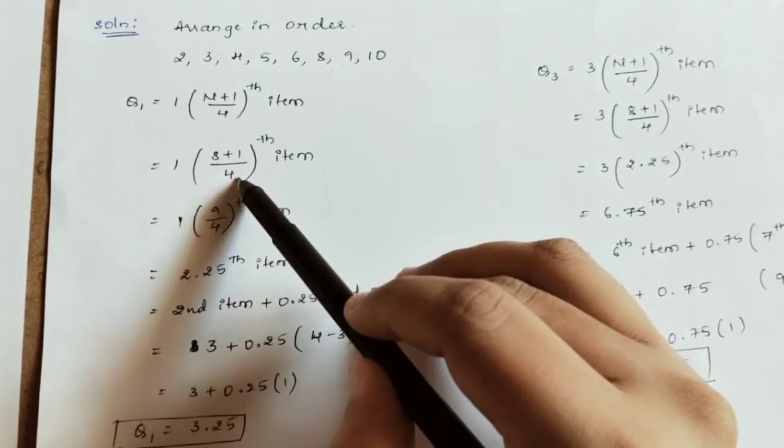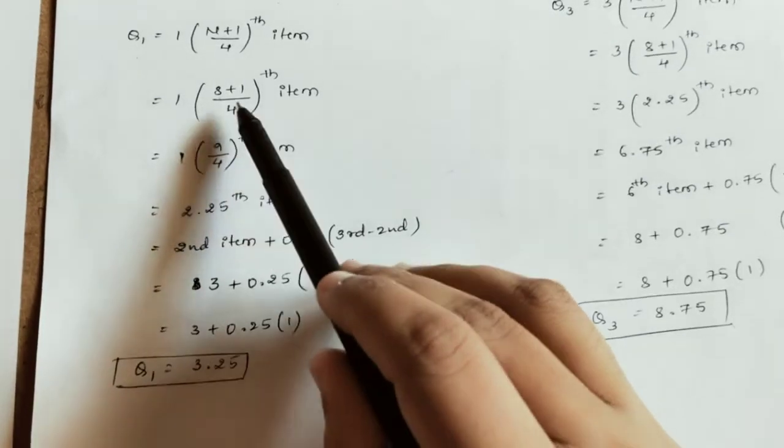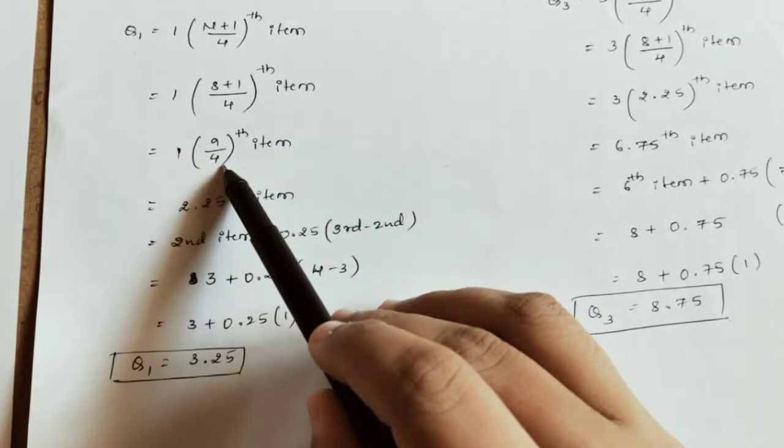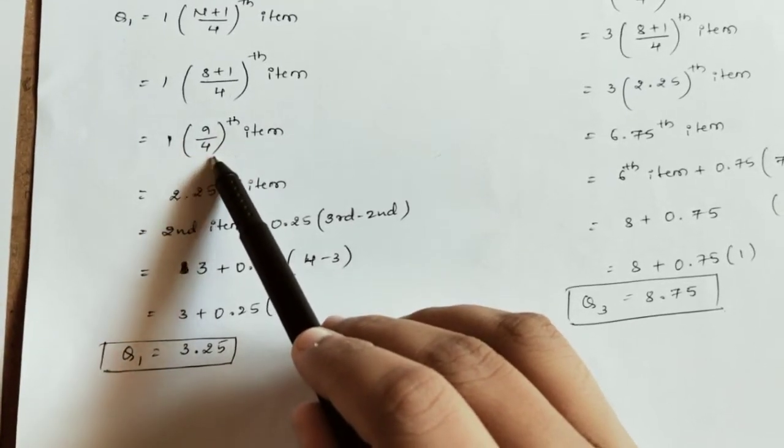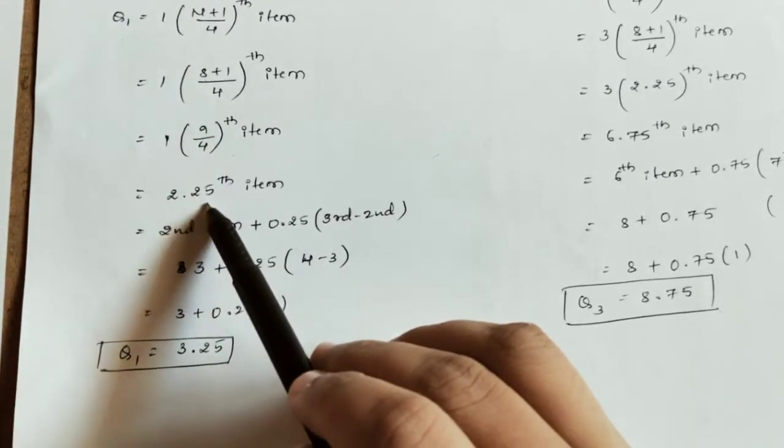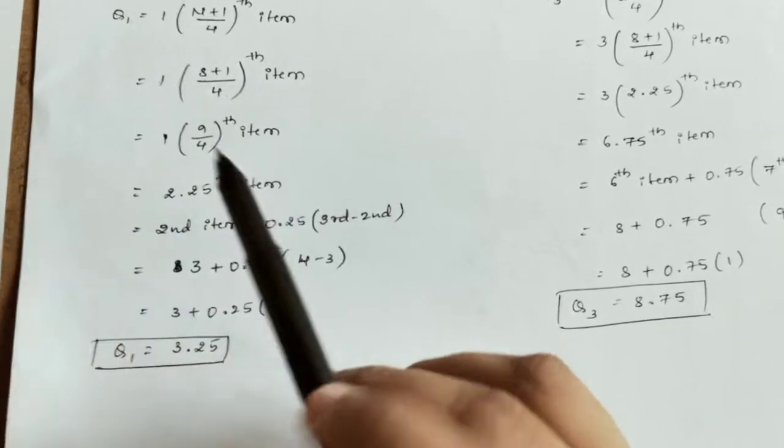So we calculate: 1 into 8 plus 1, which is 9, divided by 4. This equals 9 by 4, which gives us 2.25th item.